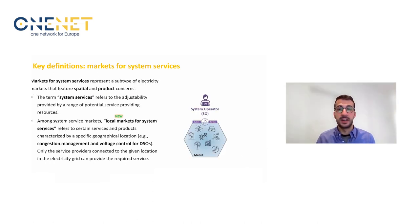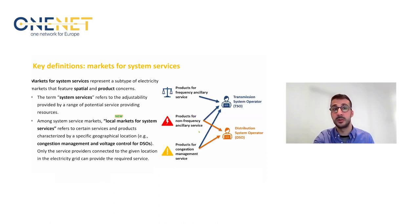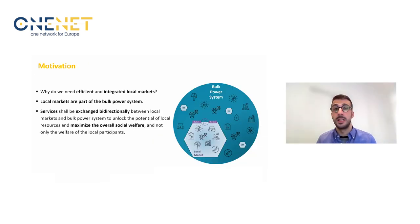Markets for system services represent a subtype of electricity markets. Among system service markets, local markets for system services refer to the exchange of services and products characterized by a specific geographical location. This is the case, for example, for congestion management and voltage control products acquired by TSOs and DSOs. Specifically, local markets for system services concern the products required by distribution system operators for non-frequency ancillary services and congestion management. Let's now discuss the motivation for designing harmonized markets that coordinate local flexibility markets and integrate them into the existing electricity markets.